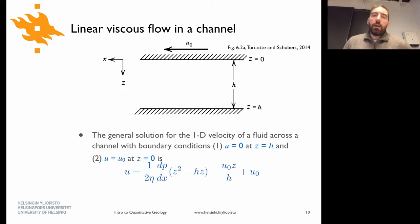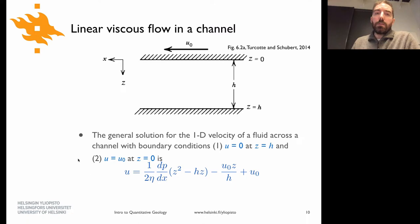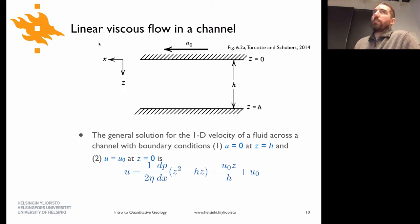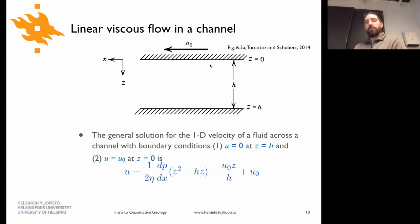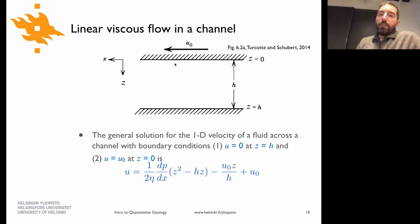Before we get into non-Newtonian behavior, we can look at the way these Newtonian fluids — sometimes called linear viscous, because stress and strain rate are directly proportional — flow. The simplest picture is to put a viscous fluid inside a channel: two flat surfaces that bound some fluid in between them, with some thickness h.